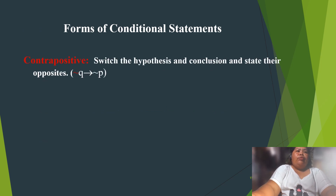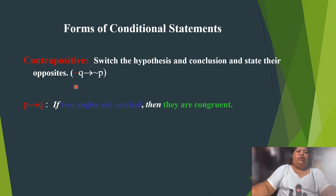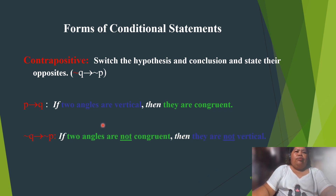We have the contrapositive. In the contrapositive, you switch the hypothesis and conclusion and state their opposites. Example: 'If two angles are vertical, then they are congruent' becomes 'If two angles are not congruent, then they are not vertical.'